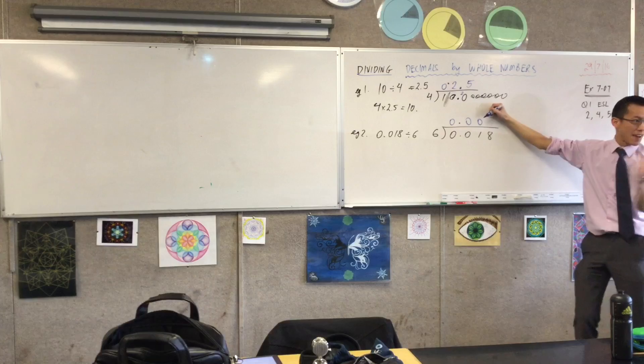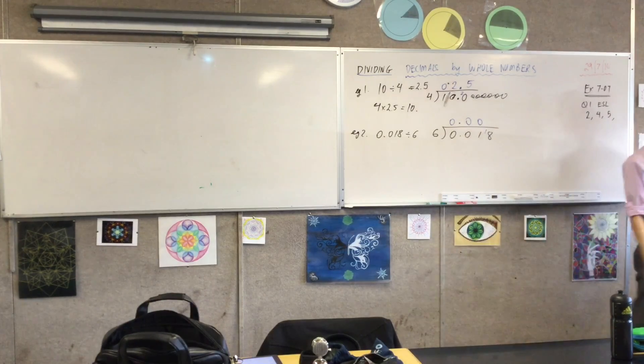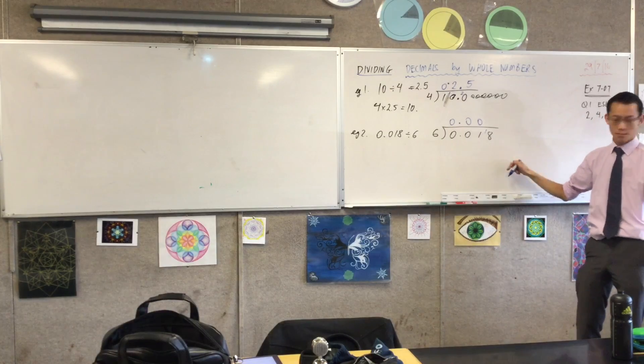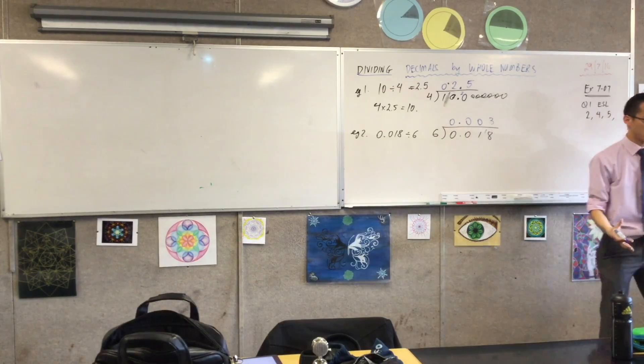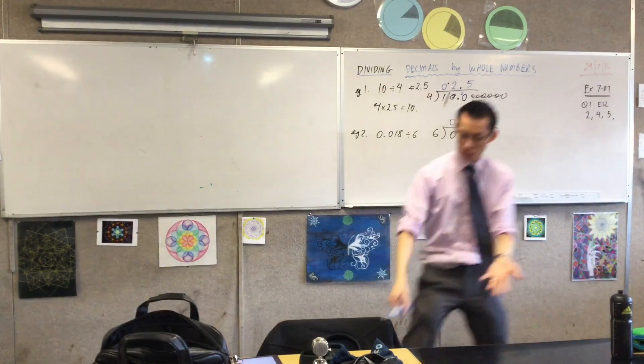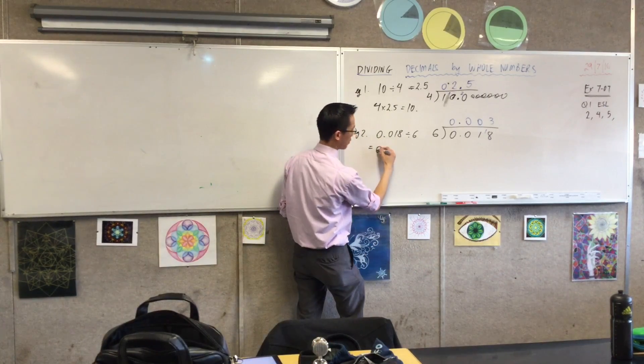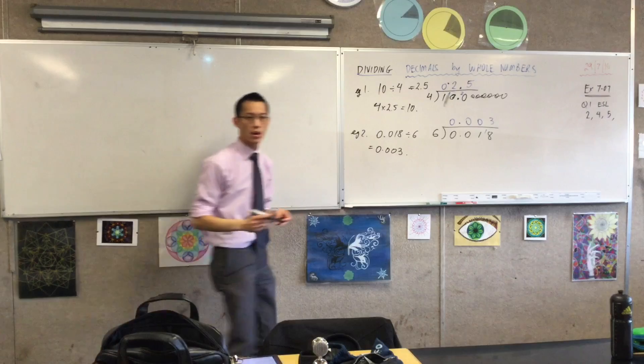I haven't used all this number, right? So, this one comes along for the ride. Make sense? And now I ask, how many 6s in 18? And the answer is? Perfect. Are there any remainders? No. Okay, so I can conclude that this is equal to, have a look, 0.003. Okay?